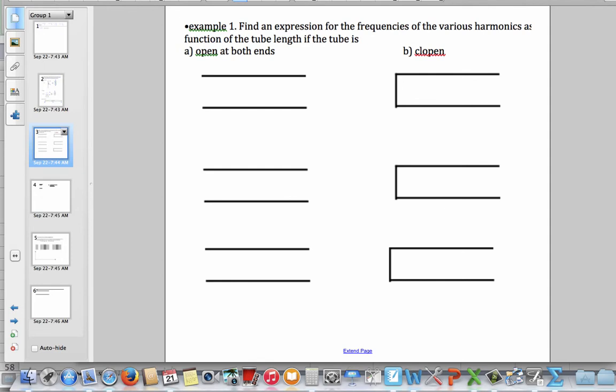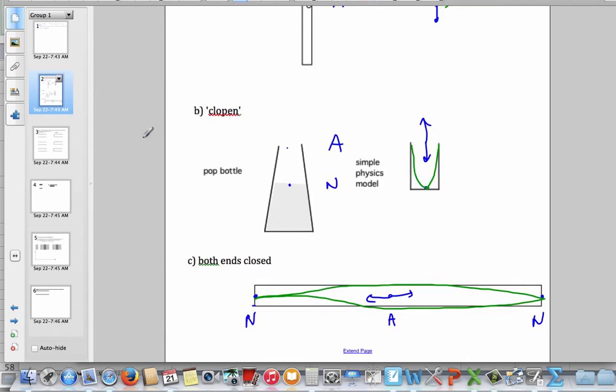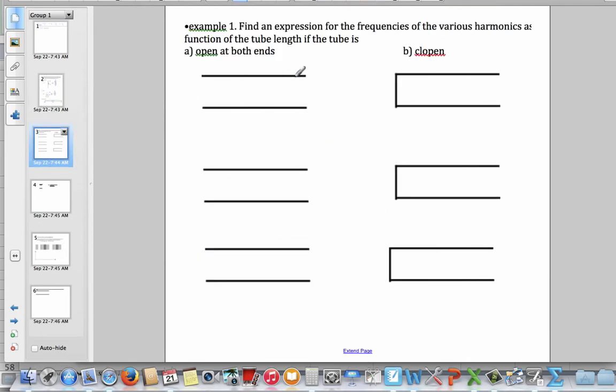Now we expect, because closed, closed, as I just draw, just looks totally like a string, nodes at the ends, we expect that'll have the same wavelength relationship. So we expect lambda n is 2L over n, for closed, closed, just like for the string.